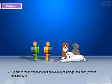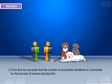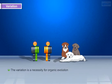It is due to these variations that no two human beings look alike, except identical twins. From this we conclude that the number of successful variations is maximized by the process of sexual reproduction. Variation is a necessity for organic evolution.